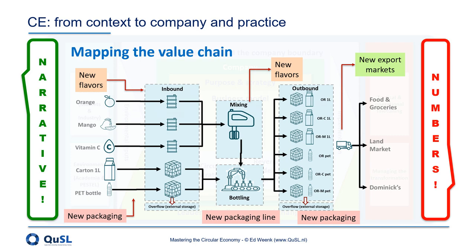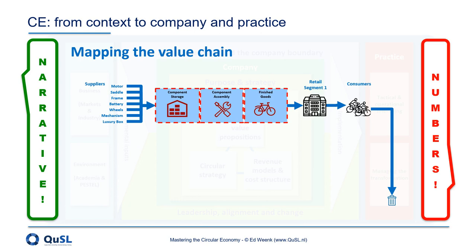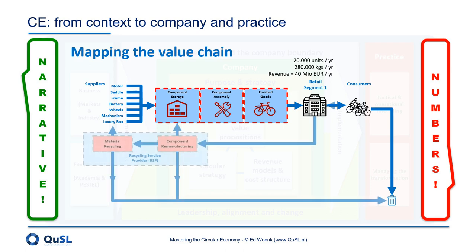Another example could be a company considering a move towards more circular approaches. They could create a mapping of the initial linear situation and populate it with some basic data about the flows — for example, in units, in kilograms, and in money. Then they could go on and add a circular scenario they consider, for example remanufacturing of components and/or recycling of materials. If they add the circular scenario to the initial mapping, then it would allow to also take the initial data into consideration and build on that.